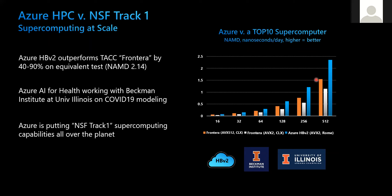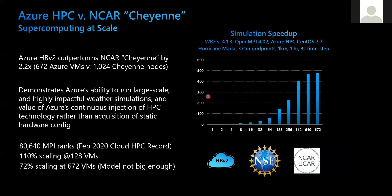We did a study with the University of Illinois and the NAMD development team, doing scaling studies both on Azure and on Frontera. Compared to Frontera, which was a top-10 supercomputer at the time, we ran about 33% faster. In another comparison, HBv2 vs. Cheyenne running WRF, we've scaled WRF up to and beyond 80,000 MPI ranks, and this was all the way back in February 2020.